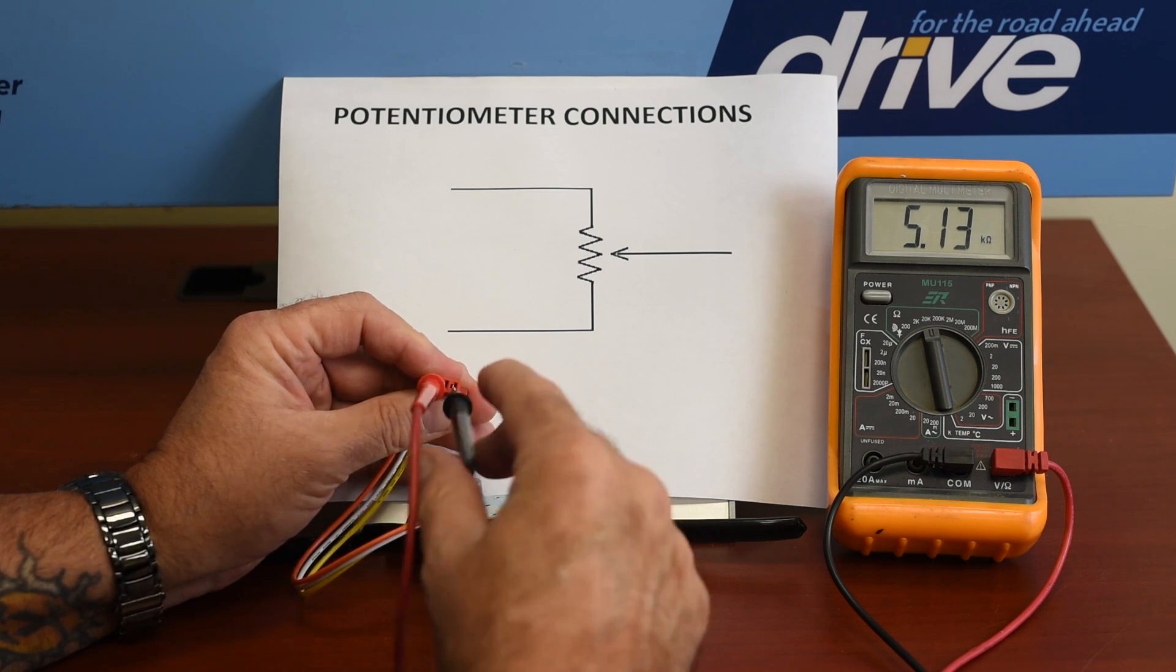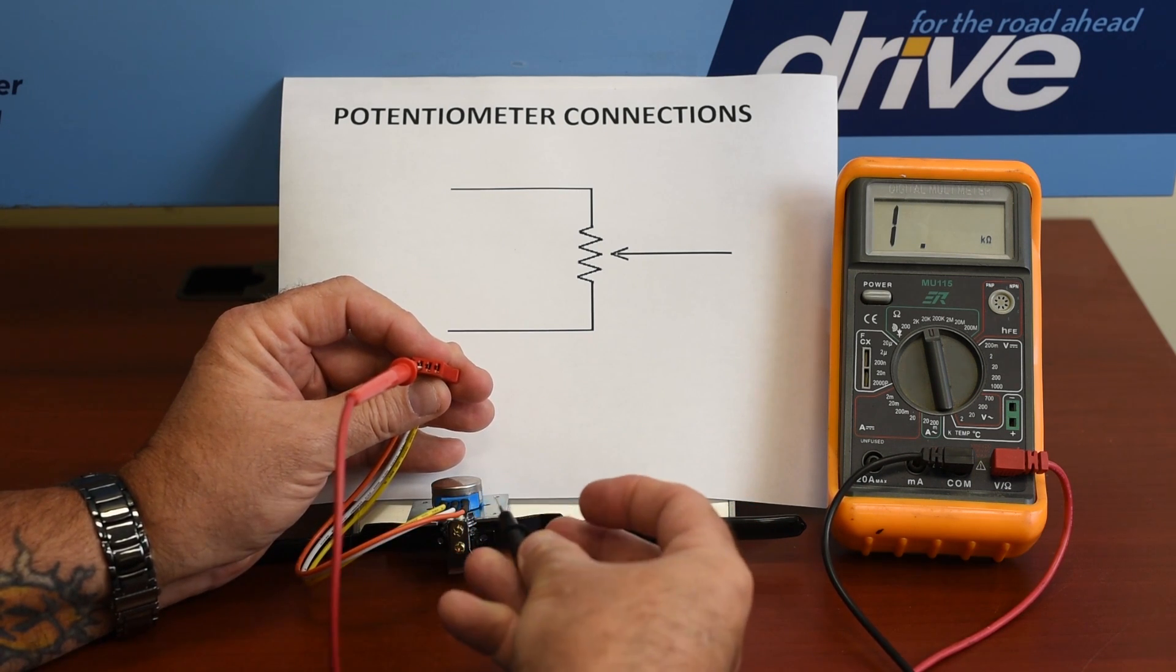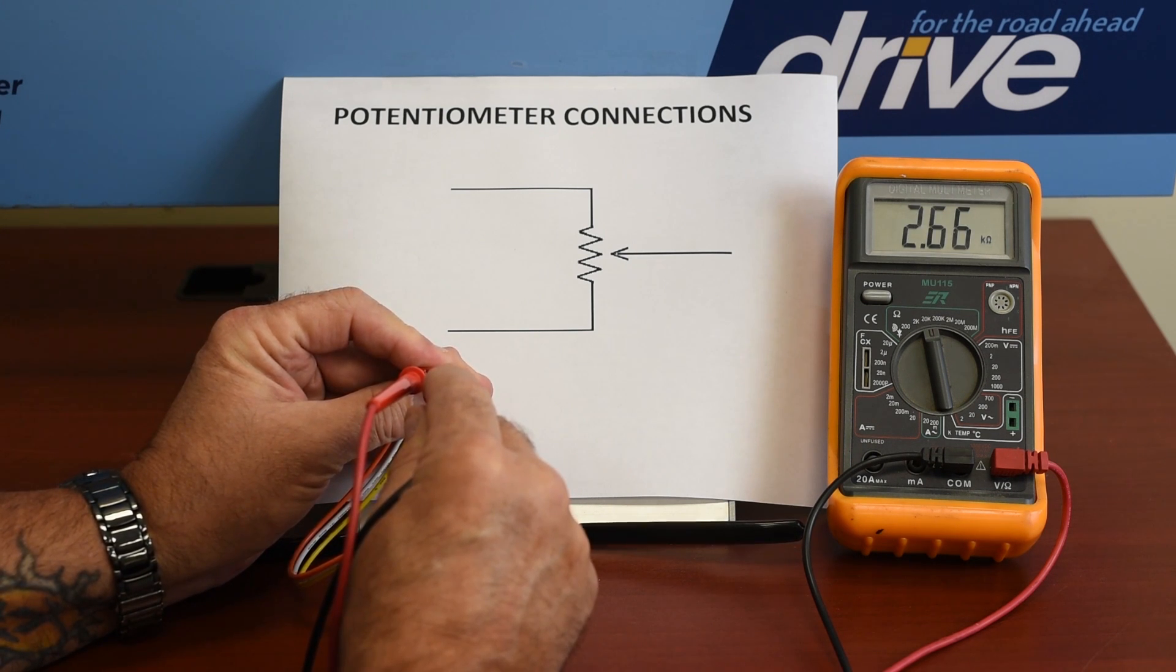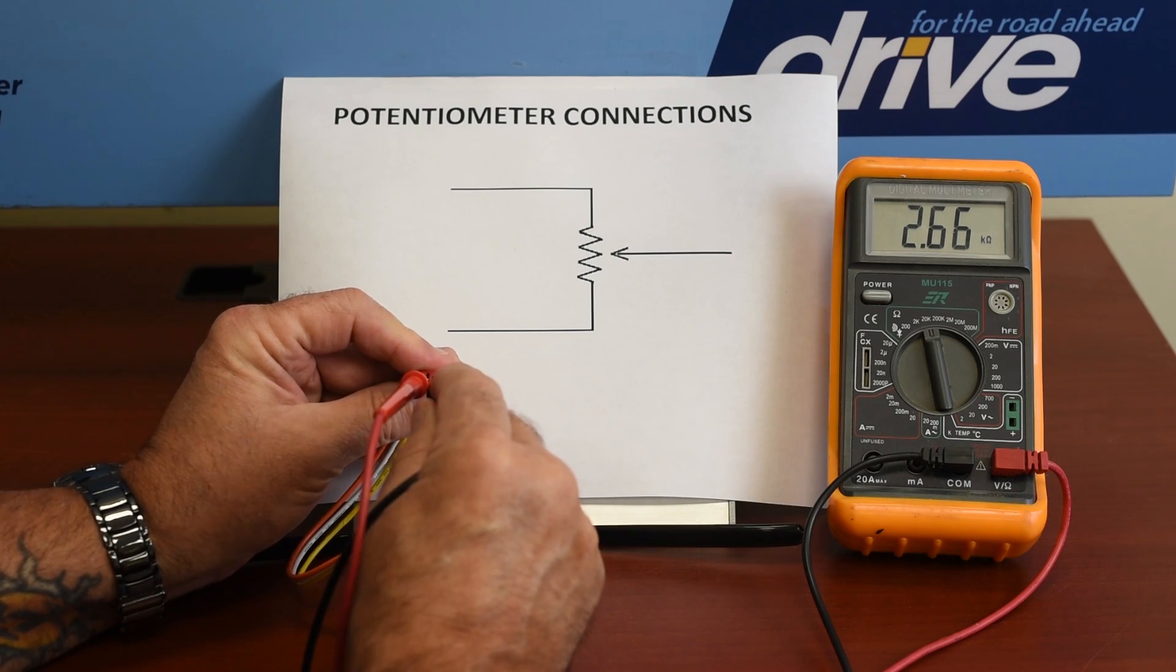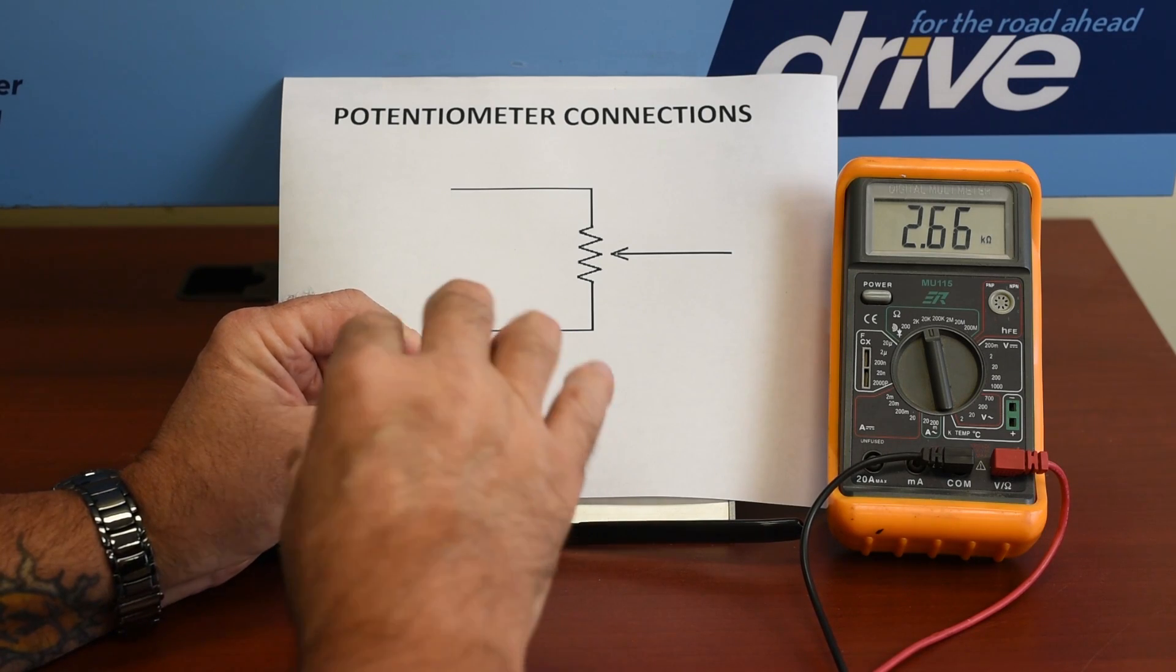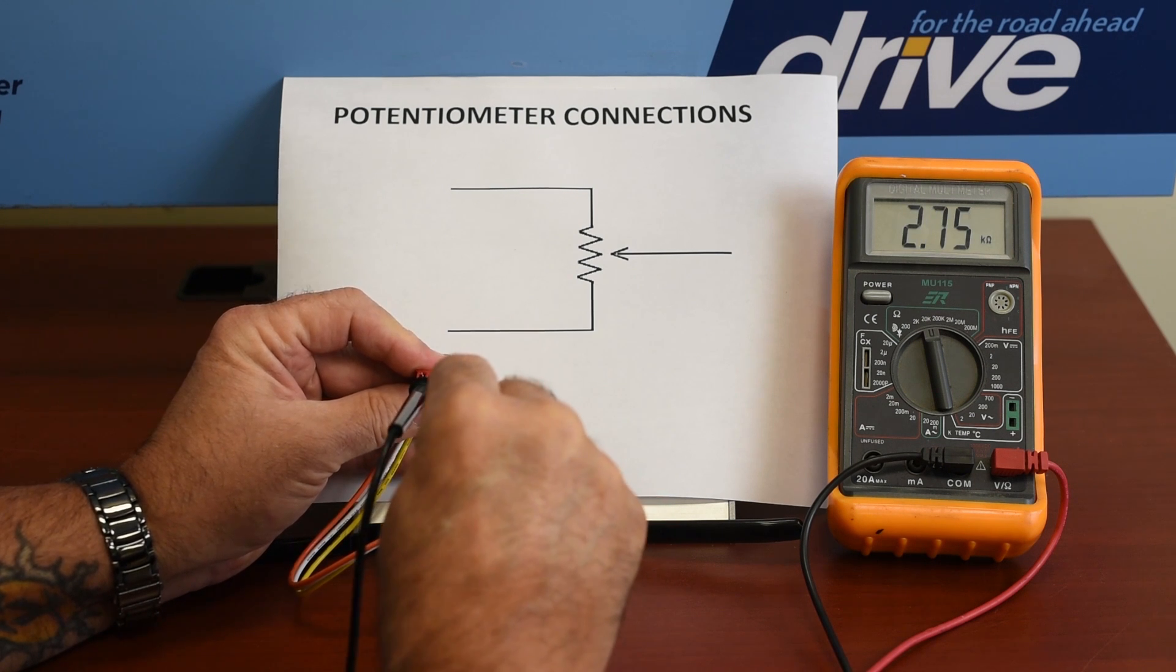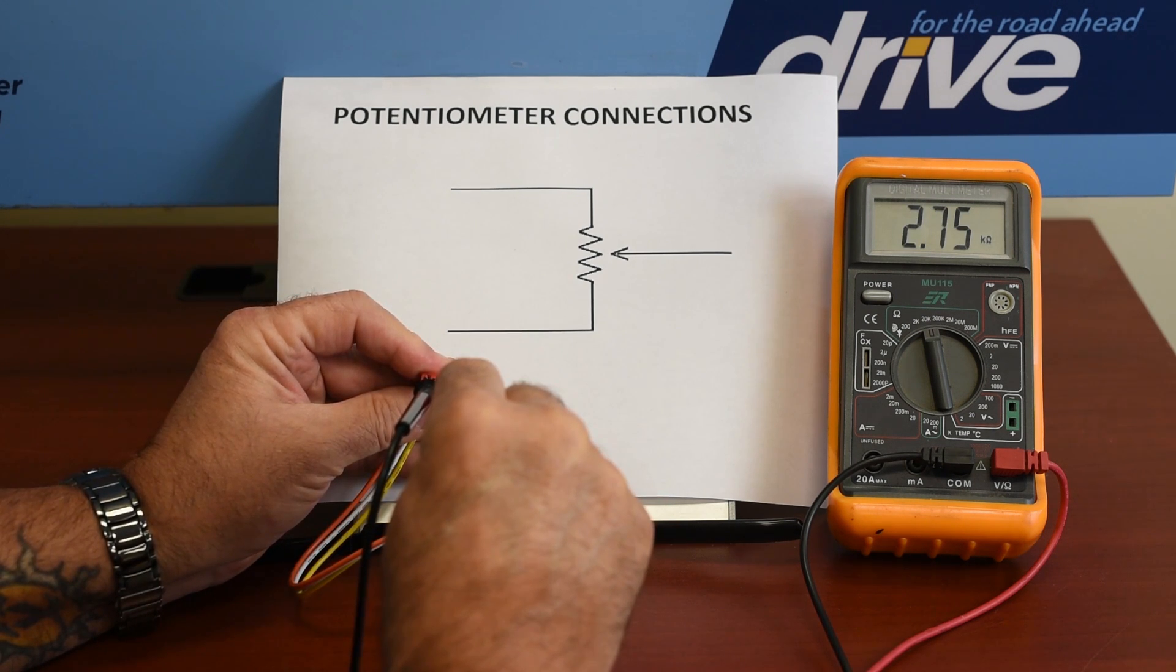Next thing we're going to do is measure the outside to the middle, and we have 2.66K. Now we measure the other outside to the middle, and we have 2.75K.